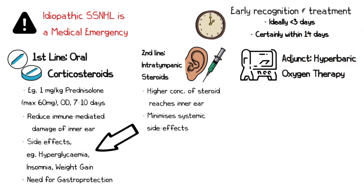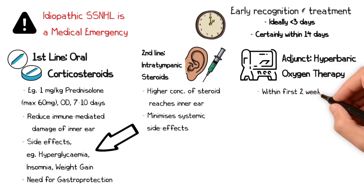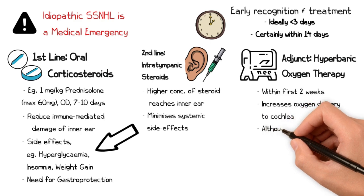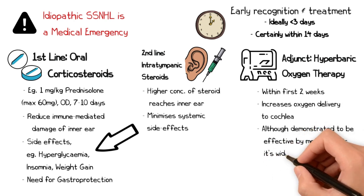Hyperbaric oxygen therapy is sometimes used as an adjunct, particularly within the first two weeks. The idea is to increase oxygen delivery to the cochlea, which may aid recovery. There are few centers, however, that offer hyperbaric oxygen therapy, and patients should receive tympanostomy tubes prior to this.